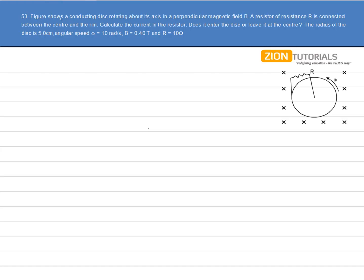Figure shows a conducting disk rotating about its axis in a perpendicular magnetic field. A resistor of resistance R is connected between the center and the rim. We have to calculate the current in the resistor and its direction.